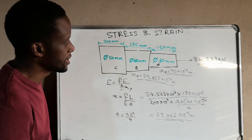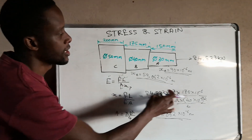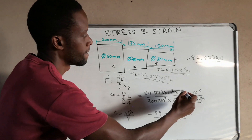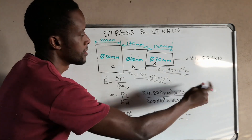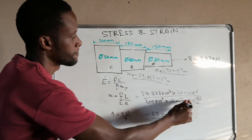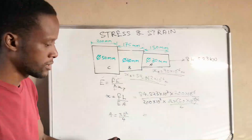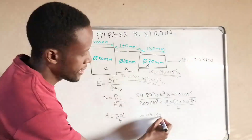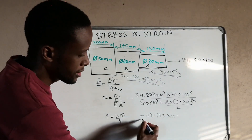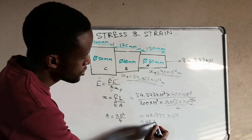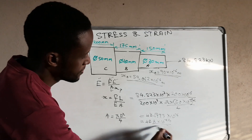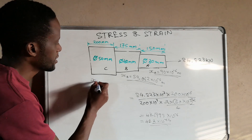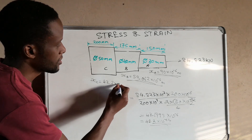For part C, the only things that change in the calculation are the length, now 200mm, and the diameter, now 50mm. Using the same formula with these values gives δx_C = 43.1999×10⁻⁶ m, which we round to 43.2×10⁻⁶ meters. So the change in length for part C is 43.2×10⁻⁶ m.